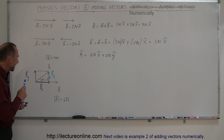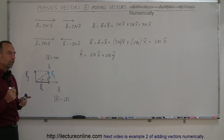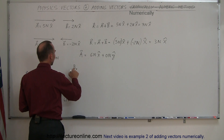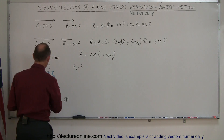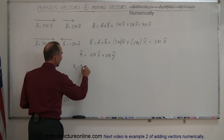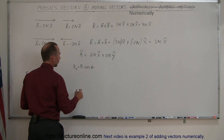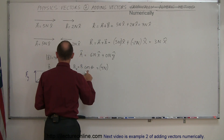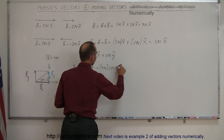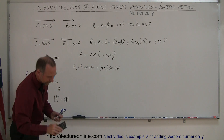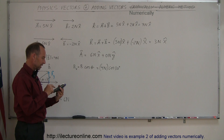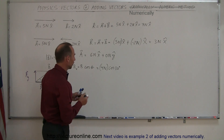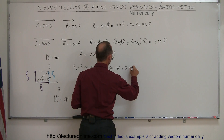How do we find the magnitude of the x and y components of the B vector? As shown in the previous video, B sub x equals the magnitude of B times the cosine of angle theta. In this case, that's 4 Newtons times the cosine of 30 degrees. Using a calculator: cosine of 30 degrees is 0.866, times 4, which gives us 3.46 Newtons. So B sub x equals 3.46 Newtons — notice that's only the magnitude.